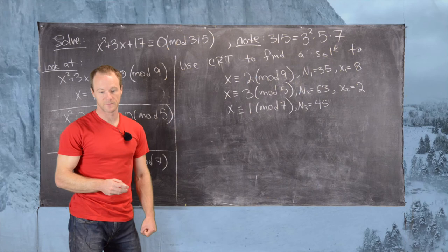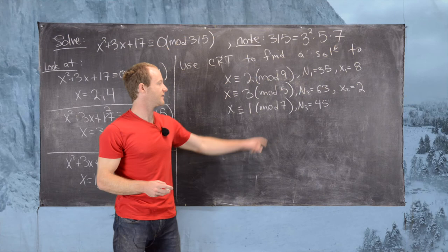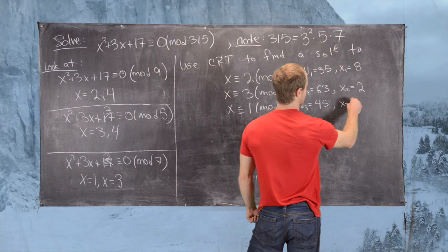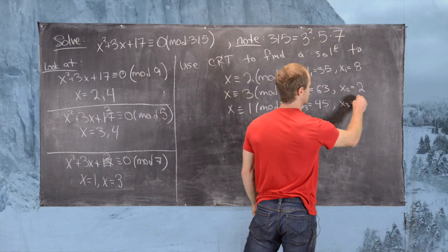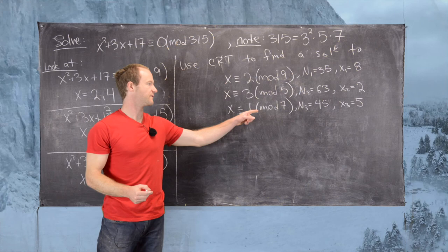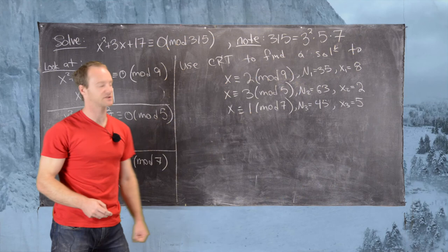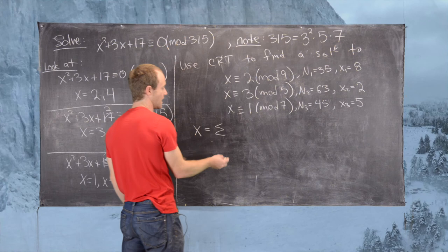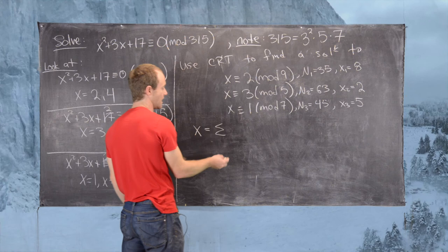For x₃: n₃ = 45 ≡ 3 mod 7, and we take x₃ = 5 because 5 × 3 = 15 = 14 + 1, which is 1 mod 7. Recall our solution is the sum of x_i × n_i × b_i, where the b_i are the right-hand side values 2, 3, and 1 from our system.